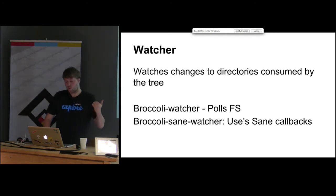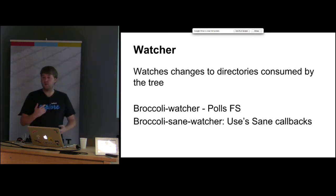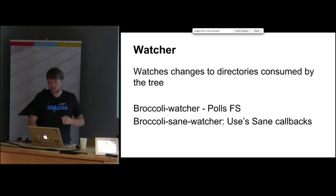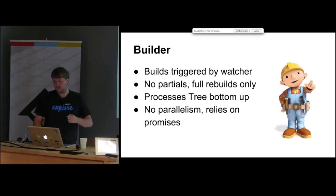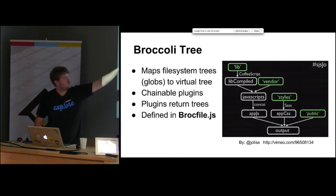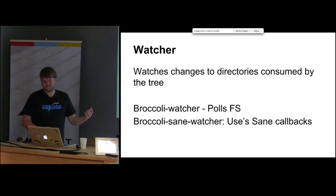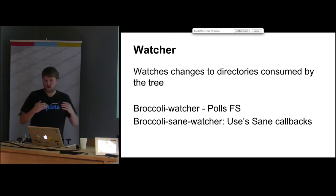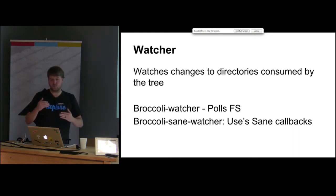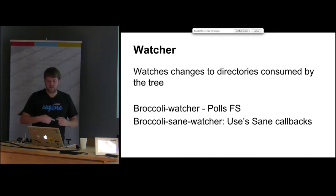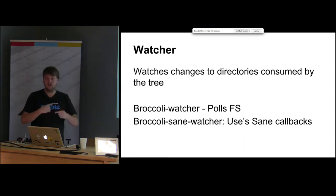The watcher is pretty simple — it just watches for changes in a directory. The default Broccoli watcher polls any of the source directories for changes recursively. Obviously, polling is slow. There's a Broccoli sane watcher that uses 'sane' as a file system monitor tool, adding callbacks so your file system tells Broccoli when to rebuild instead of having a polling loop. The watcher's only job is to know what the source elements are and when to kick off a new build.